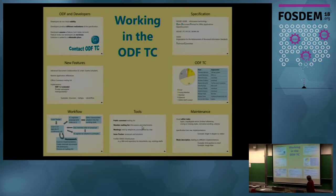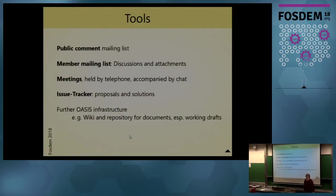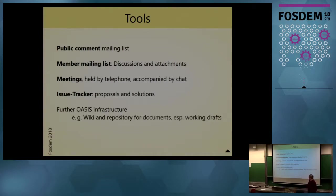Let us have a look at the tools. We use common tools like mailing lists, meetings, and a bug tracker. The public mailing list gives non-members a means to report bugs, request features, or give other input to the TC. The member mailing list is used for discussions and attachments. Agendas and meeting notes are routinely posted there. Both lists have a public archive.